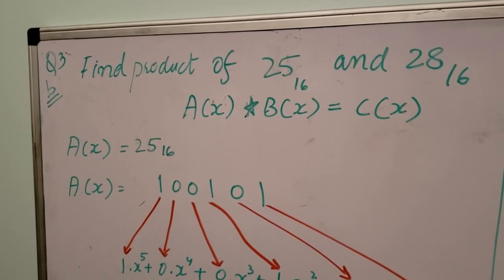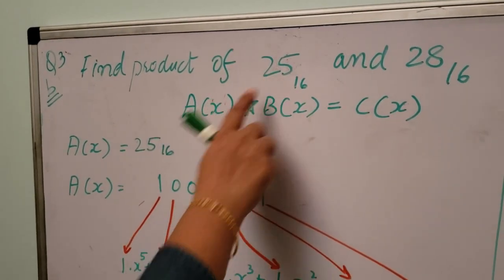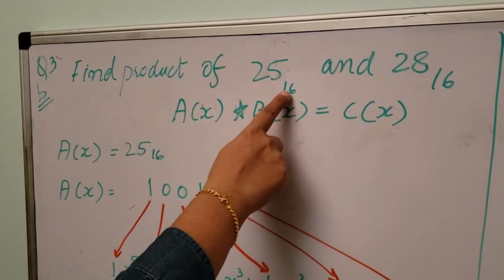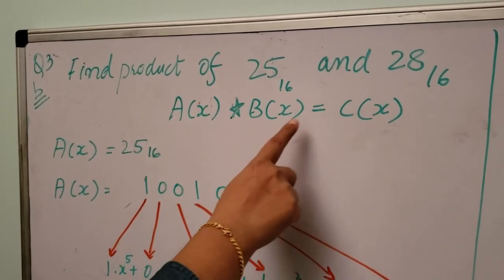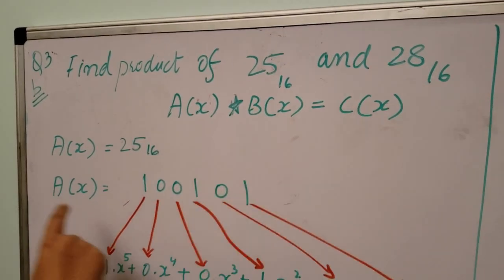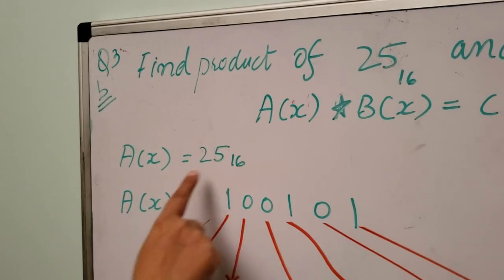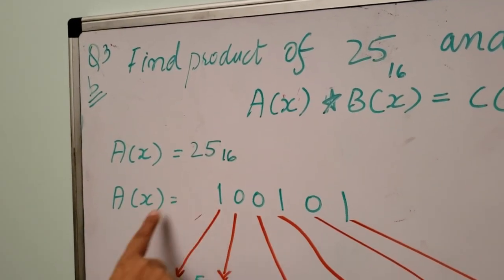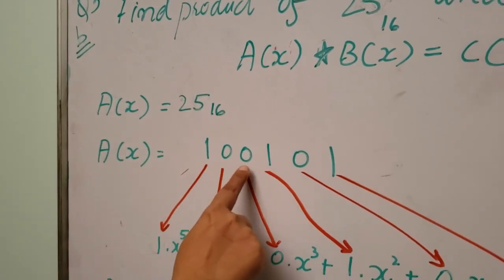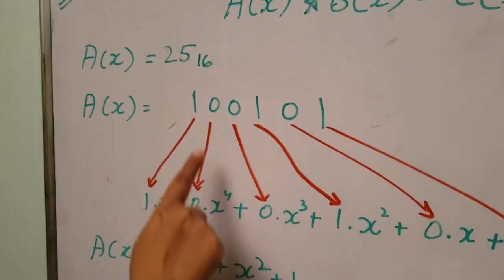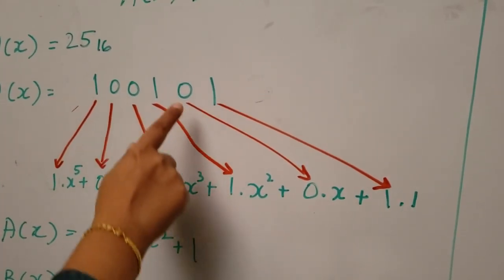In question 3 part b, find the polynomial product of 0x25 and 0x28 according to the equation a(x) times b(x) equals c(x). We will change hexadecimal 0x25 into a binary number, where the binary of 0x25 hexadecimal is 100101. When we change this binary number system into a polynomial...